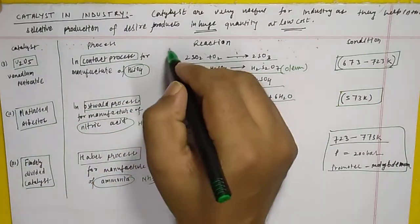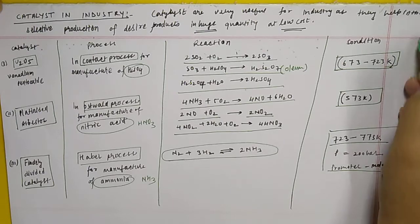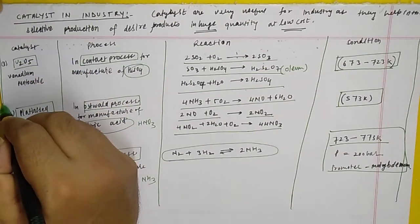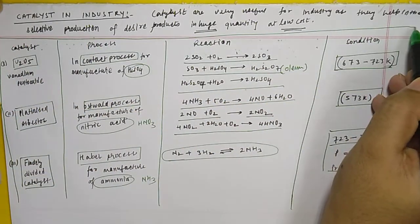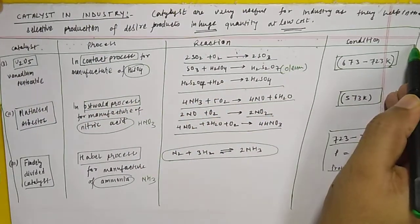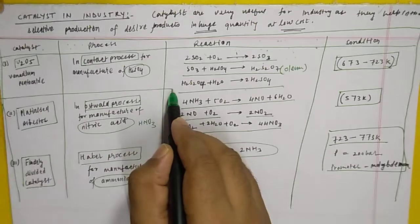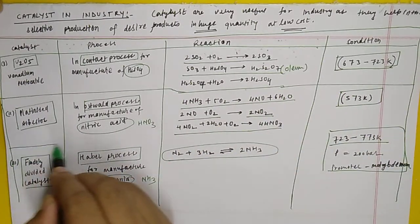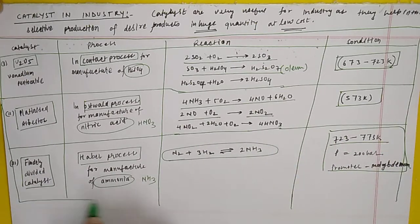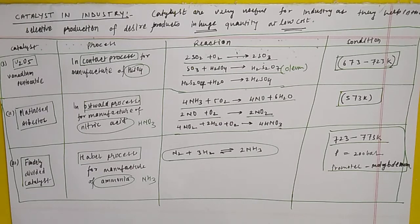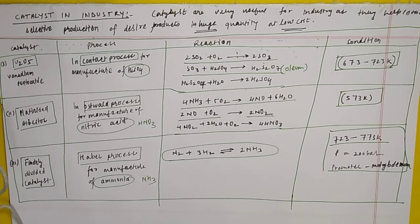We studied today the topic of catalysts in industry. Three catalysts used on an industrial large scale are: vanadium pentoxide for the Contact Process (production of sulfuric acid), platinized asbestos for the Ostwald Process (production of nitric acid), and finely divided iron metal for the Haber Process (production of ammonia). The reactions and conditions were also explained. Thank you so much for watching.